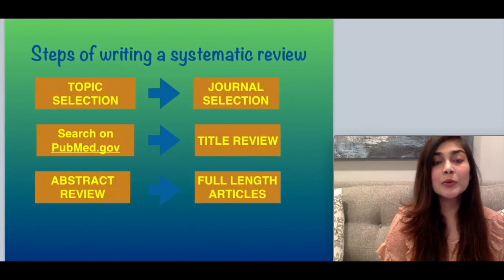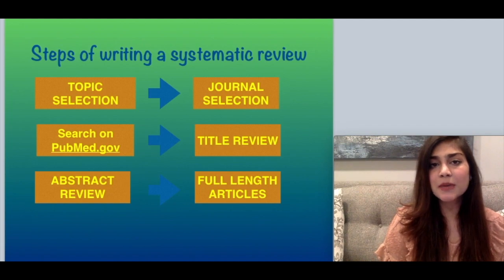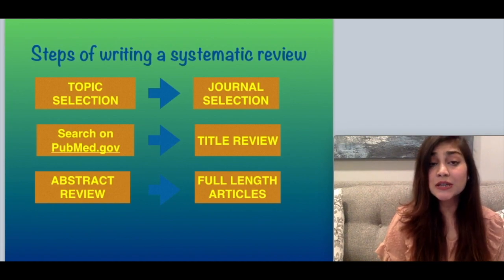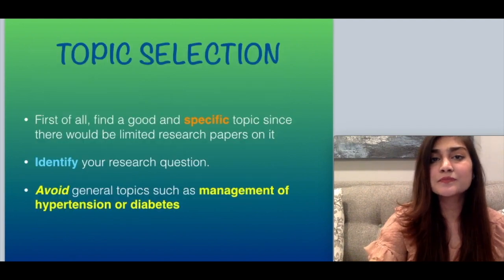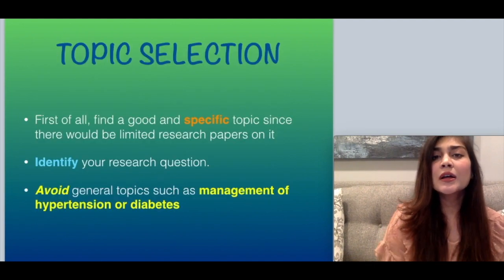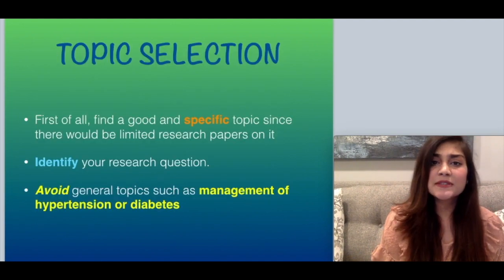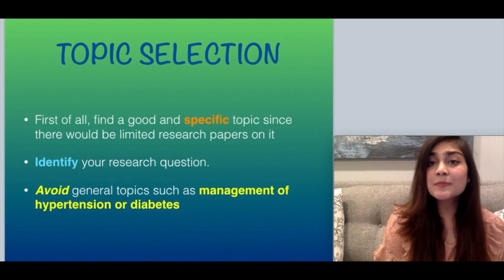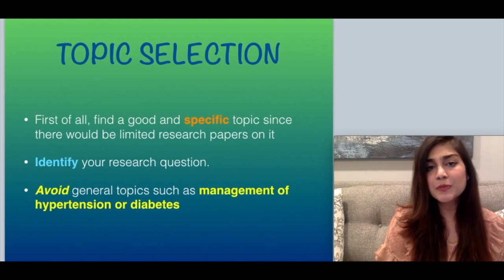Now we will be exploring the steps of writing a systematic review. The first step is topic selection. Find a good and specific topic since there would be limited research papers on it.